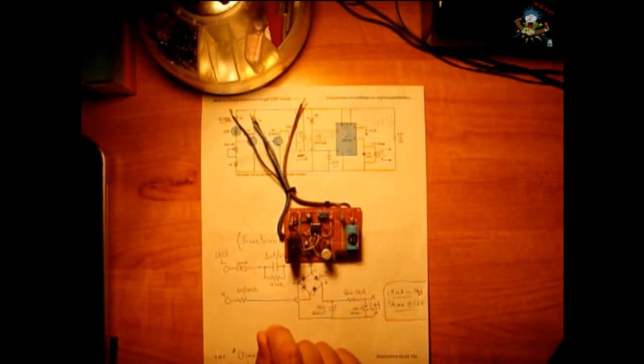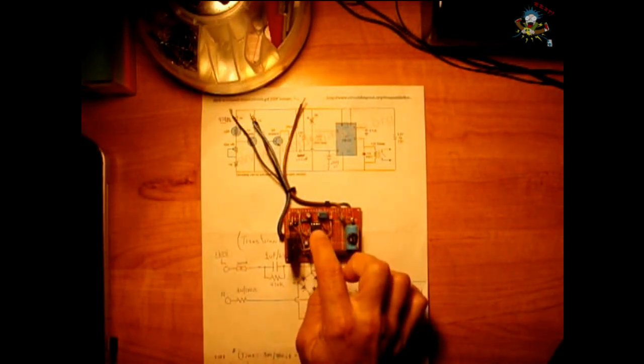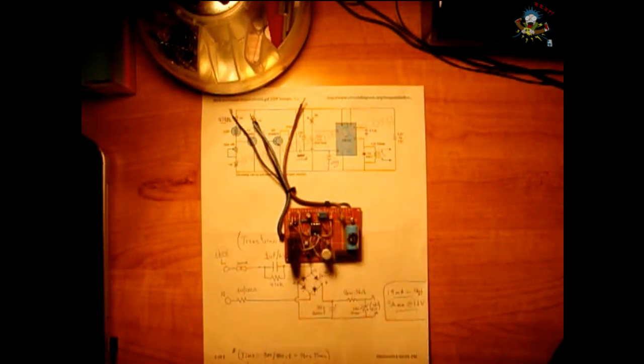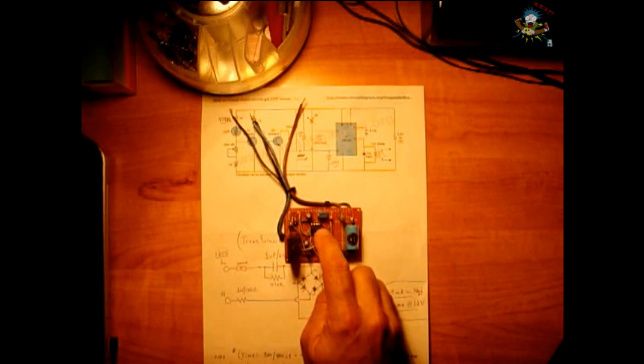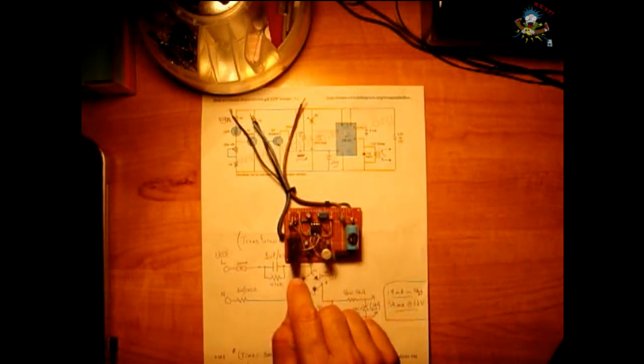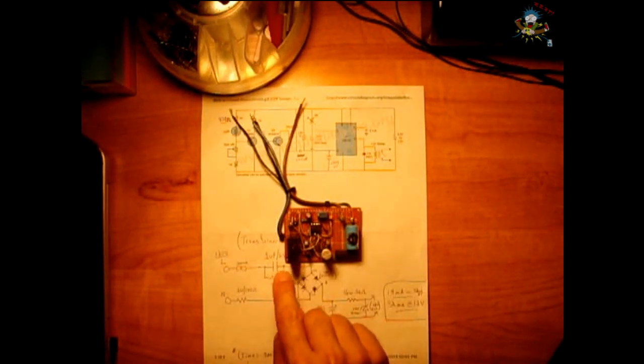After the circuit turns on, the relay will remain on, powering whichever circuit you want to power for the duration which is set by the resistor and capacitor value on pins six and seven of the 555 timer. It's a one-shot configuration for the timer. So once it triggers, the circuit will remain on, the relay will remain closed, the contacts, for the full duration.